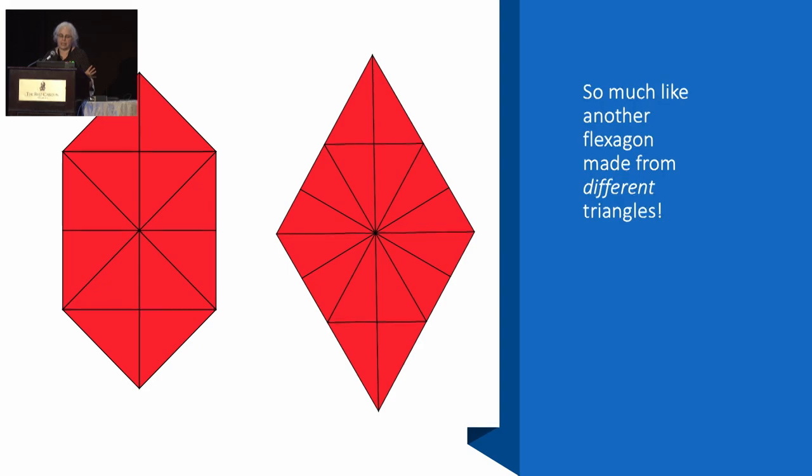And this I find really fascinating. This rhombus has a lot of characteristics in common with the flexagon on the left, which is made of isosceles right triangles. And I presented that at an earlier G4G. Both these flexagons have a regular polygon in the middle, and then two pairs of triangles on opposite sides to make the new shape.